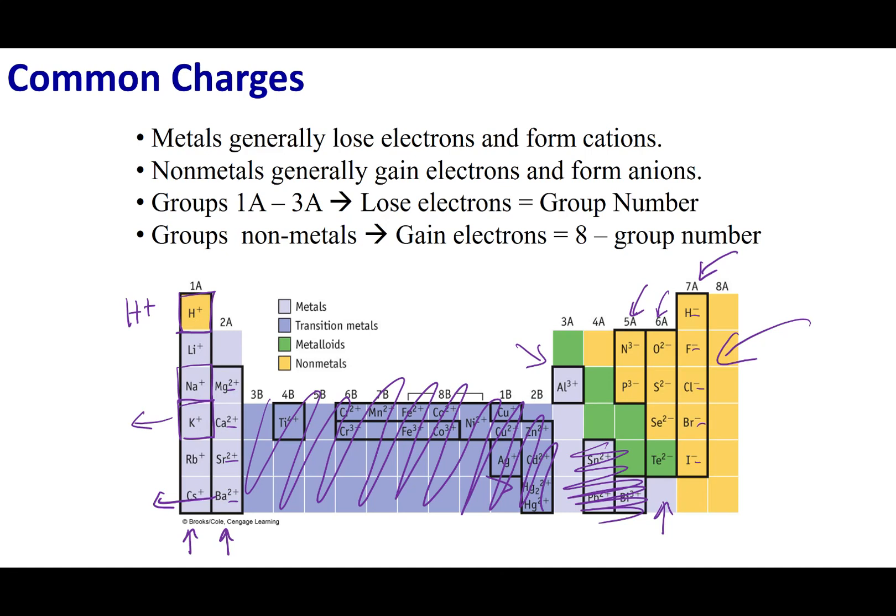I should note one weird element and its common charges, and that is hydrogen. Hydrogen can go both ways. It can be the plus one ion or I can make hydride which is the minus one ion. It's a little strange because it sits at the very top of the periodic table.